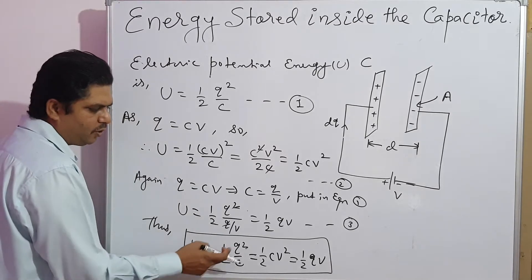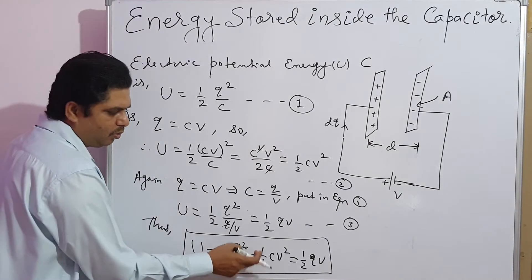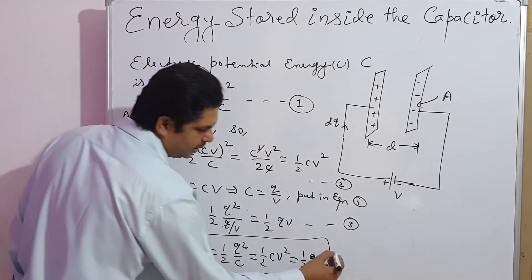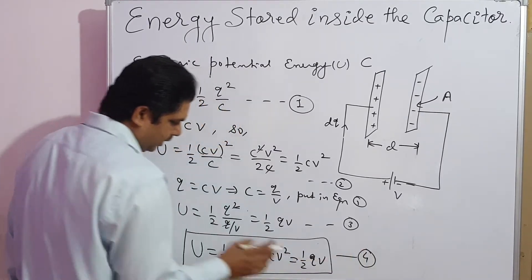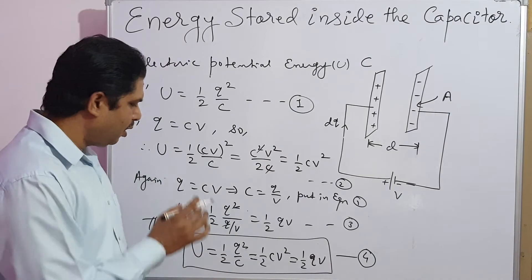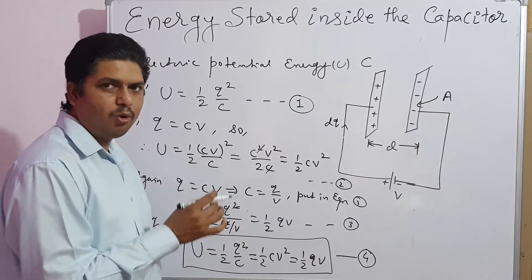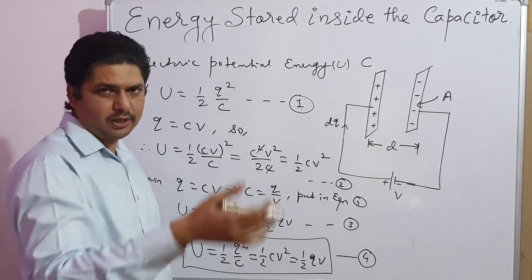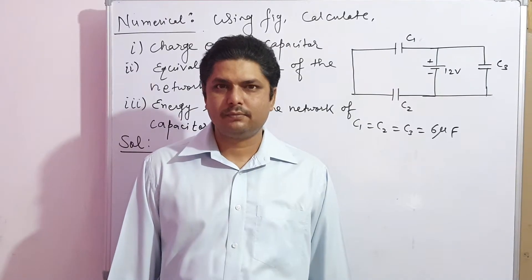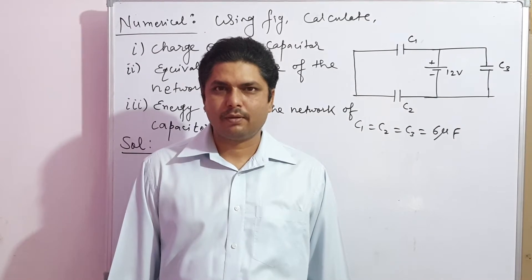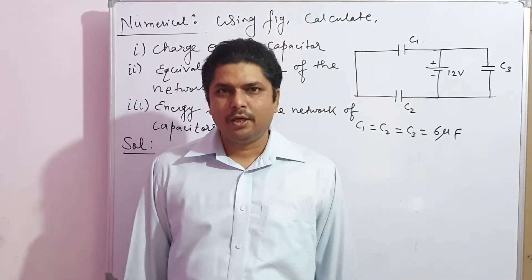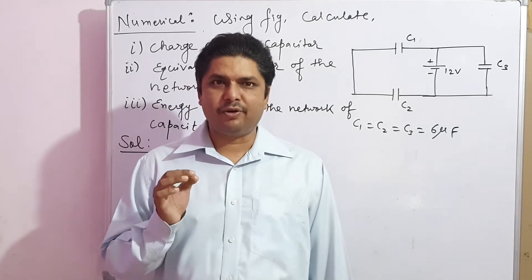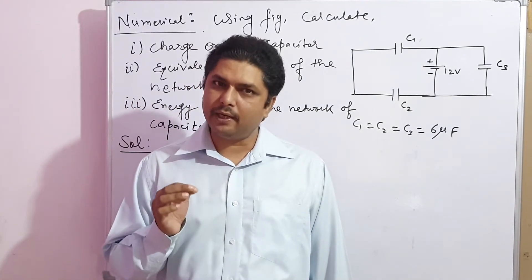Thus from equations 1, 2, and 3, the expression for potential energy stored — or work done in storing charge inside the capacitor — is: U equals half Q squared by C, equals half CV squared, equals half QV.